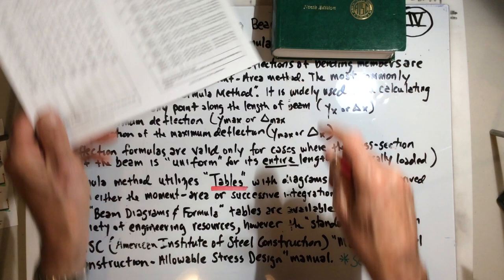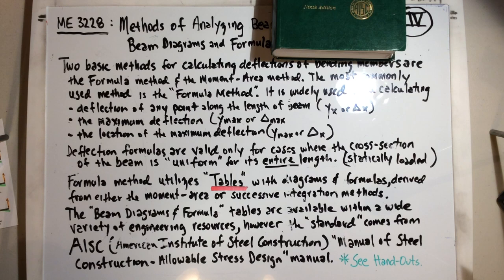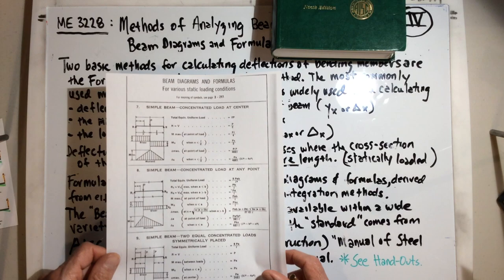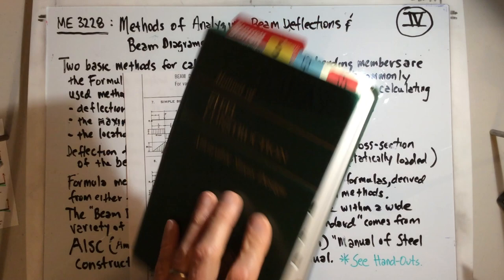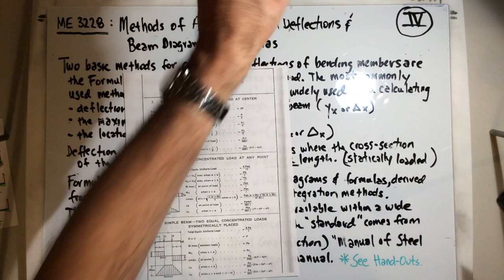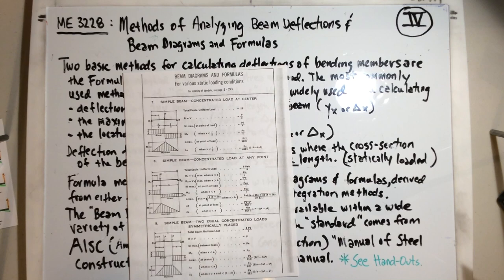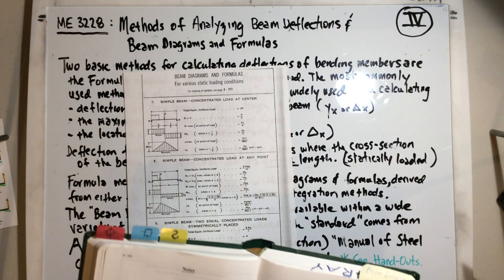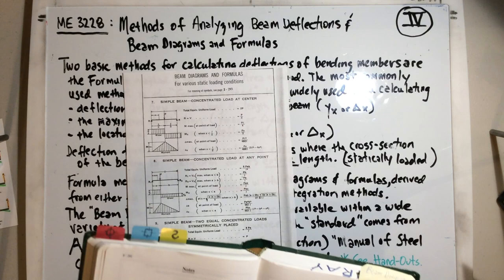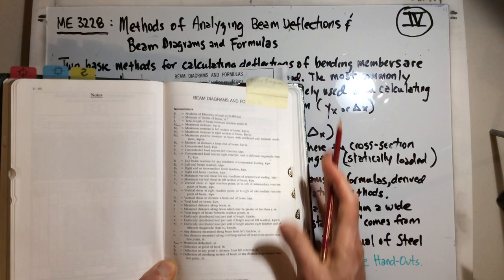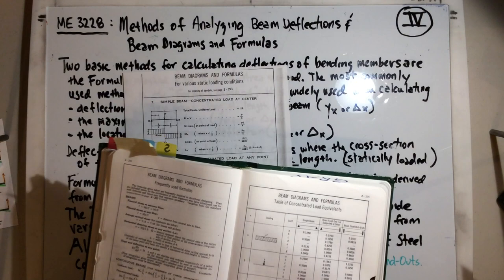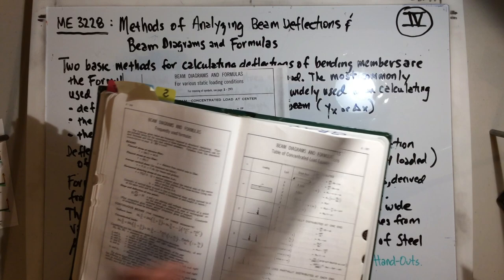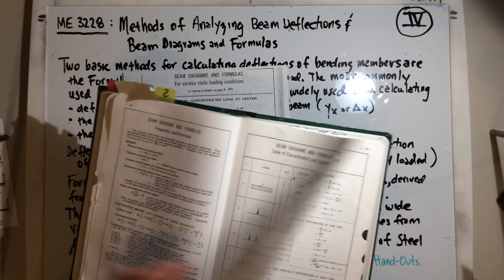Now let me show you a typical beam diagram and formulas page from the AISC manual. I'm going to send you a copy showing cantilever beams, which will help with your lab, along with a legend explaining what all the letters mean. You'll have this to look at so you can determine what each variable means in those equations.